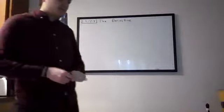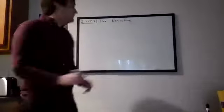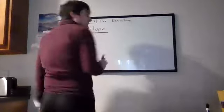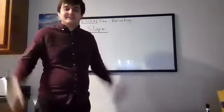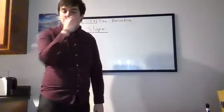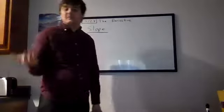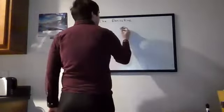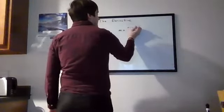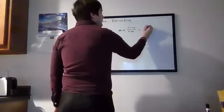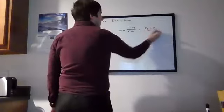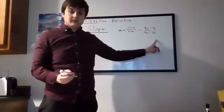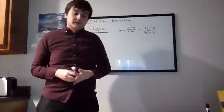Before we talk about the derivative, we need to review slope. We've already mentioned this a few times when graphing lines. The slope of a line tells you how much it's inclined, and the way we find it is rise over run. If we have two points, we subtract the y-values from each other and subtract the x-values from each other — that gives us the slope.